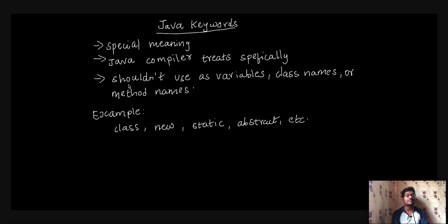We shouldn't use keywords as variables, class names, and method names. If we use reserved words as variables, class names, and method names, they should be used for a specific purpose to define that purpose.